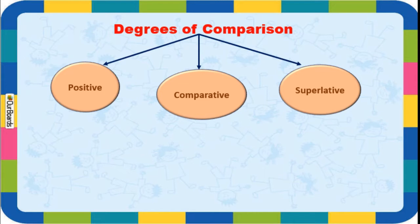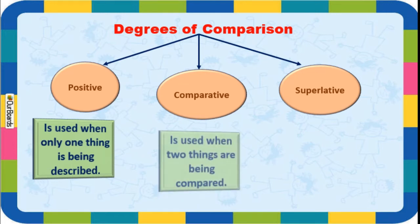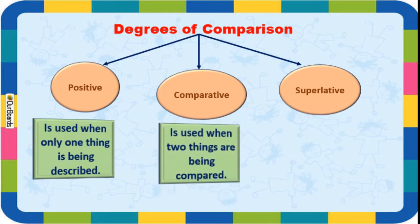When to use all these - positive degree: it is used when only one thing is being described. Comparative degree: it is used when two things are being compared. In comparative, we are doing the comparison between two things. For example, 'He is taller than she' - that is how a comparison between two works.